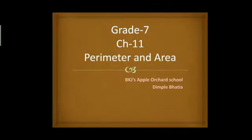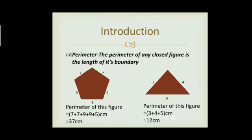Very good morning students. Today we are going to start our new chapter, chapter number 11: Perimeter and Area. What is perimeter? The perimeter of any closed figure is the length of its boundary. In simple language, the boundary length of any closed figure is the perimeter, which means the sum of the sides equals the perimeter of the given figure.